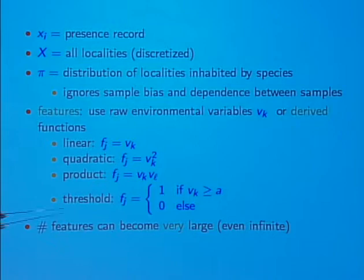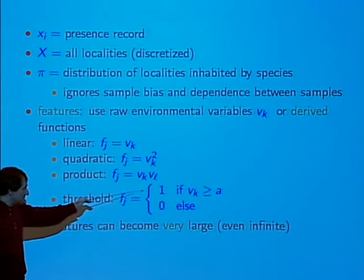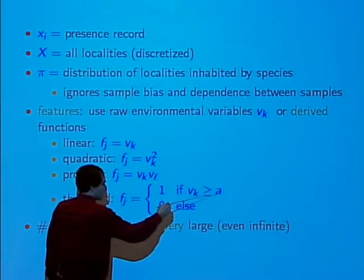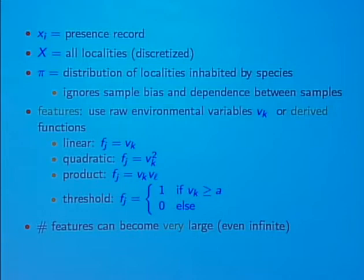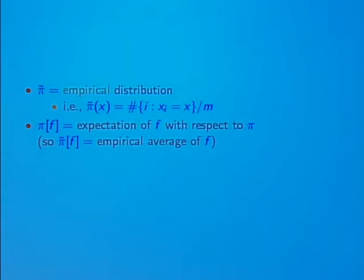By deriving features in this way, the number of features can become very large — in fact, it can become infinite very quickly. In the case of threshold features, you actually have an infinite number of features because you have one for every possible threshold. So you can end up with many, many features very quickly.